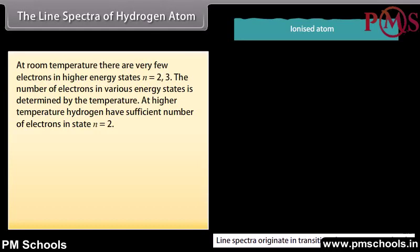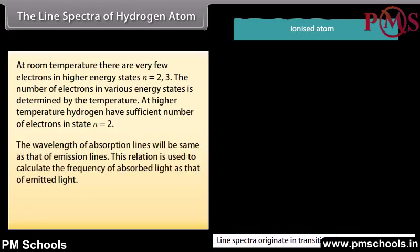At higher temperatures, hydrogen has a sufficient number of electrons in state n = 2 and n = 3. The wavelength of absorption lines will be the same as that of emission lines. This relation is used to calculate the frequency of absorbed light, same as that of emitted light: E₂ − E₁ = hν₁₂ = hc/λ₁₂.